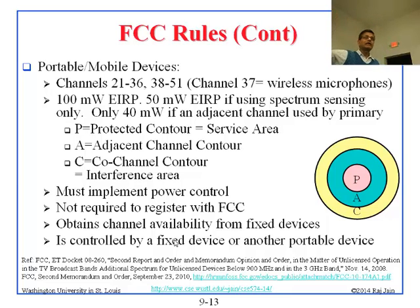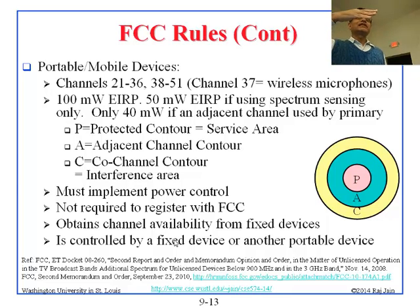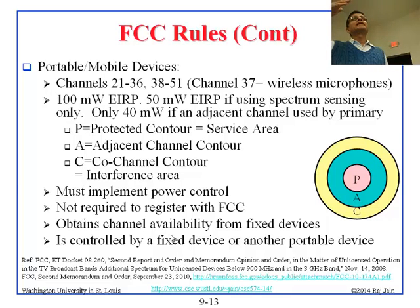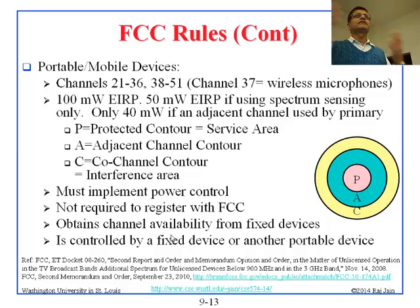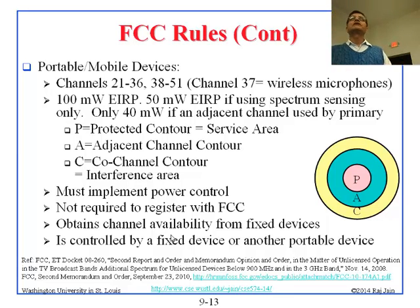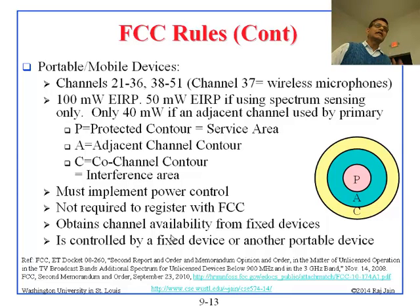The FCC announces a rule and then the industry sues them — this is the United States. So basically they sue, say 'this is not fair,' and then the FCC changes it. Then somebody else wants something different, so they change it again. This process keeps going. There have been third and fourth reports and memoranda, so the rules have been modified multiple times.